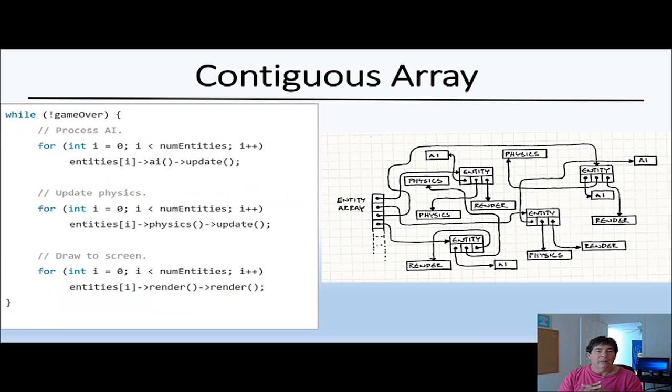The way it's used here is in order to do an update you just go through the number of entities, you do all the AI updates and all the physics updates and all the render updates. Now if you take a look at the chart that I've drawn on the right, this is actually going all over the place, there's no real continuity to it.